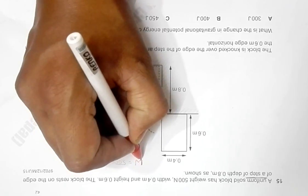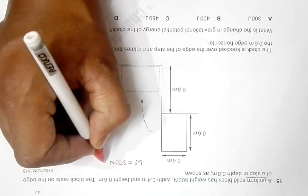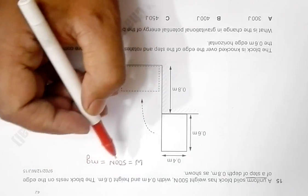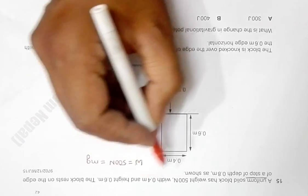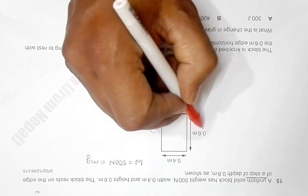The weight of the body is equal to 500 Newton, which is also equal to M into G. Its width is 0.4 meters as shown here, and the height is 0.6 meters, which is shown here.